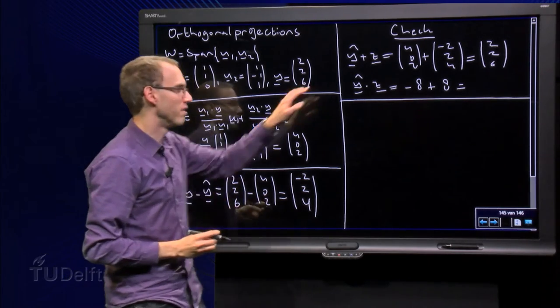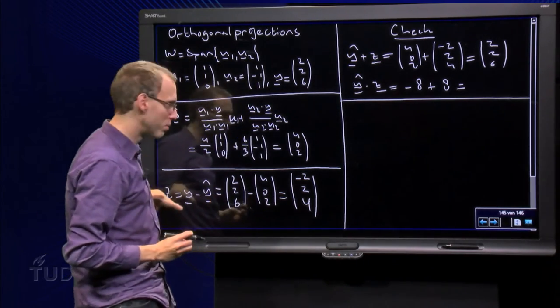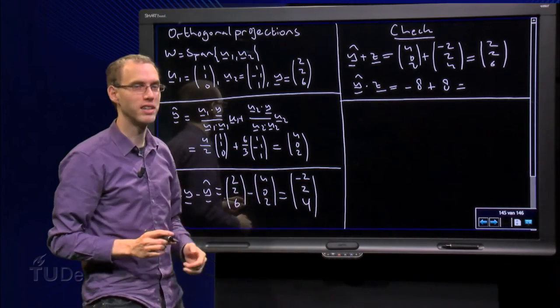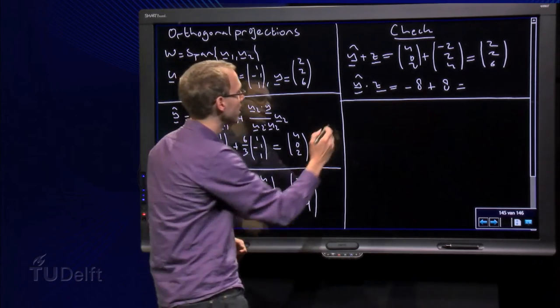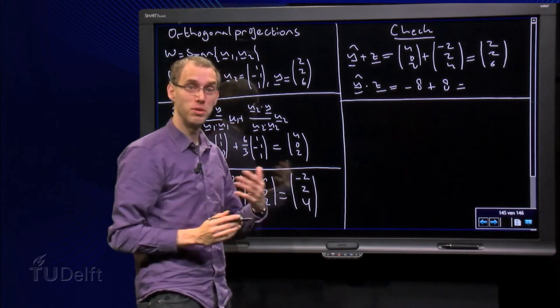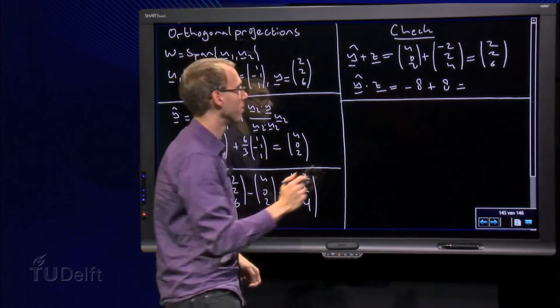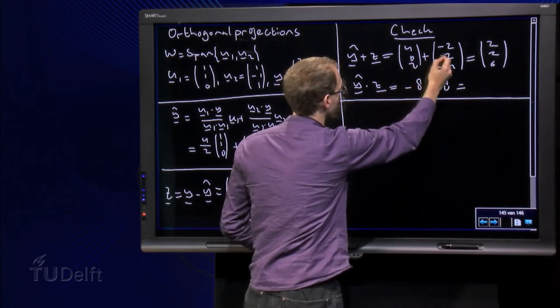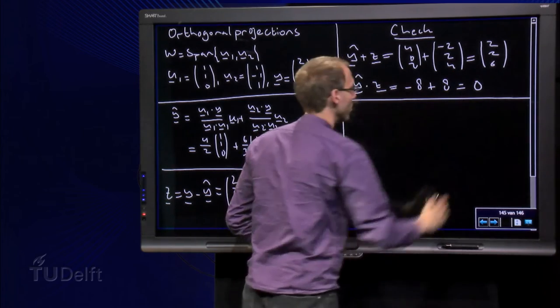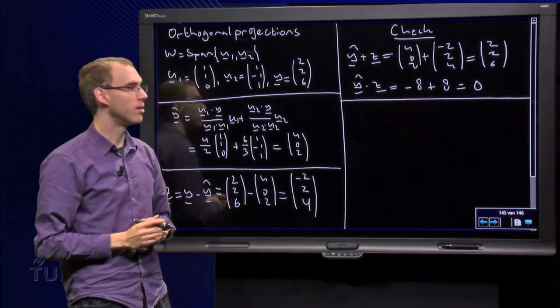But it would be silly if this were wrong, by the way, because we computed z as y minus y-hat. But okay. And then check: y-hat dot z has to be 0—they have to be orthogonal to each other. We get -8 plus 0 plus 8 equals 0. So that's fine. That's our check.